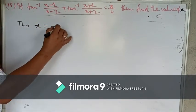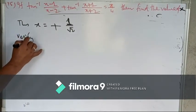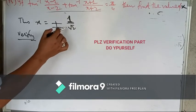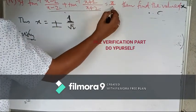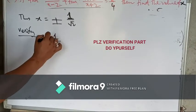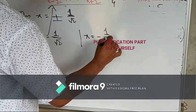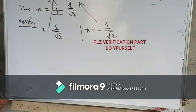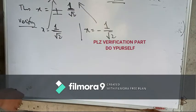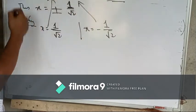We have seen x equals plus or minus 1 by root 2. Now our duty is to verify whether this function — that means for x equal to both plus and minus 1 by root 2 — this expression equals pi by 4 or not. So we have to check by putting x equals 1 by root 2 and x equals minus 1 by root 2 on the left-hand side to verify both cases.